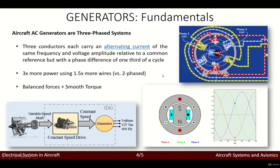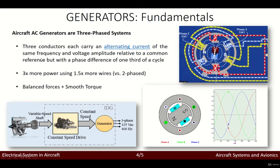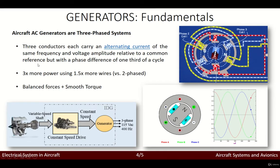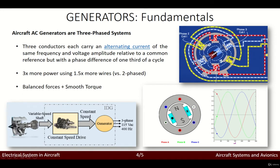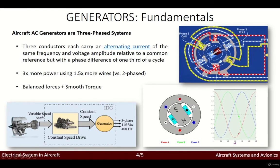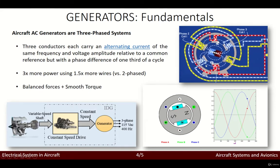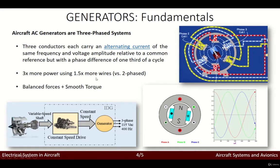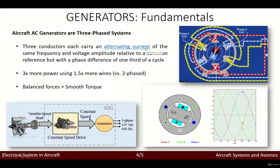So what are the fundamentals of generators? First of all, we need to understand that our generator will be based on a three-phase system. The three conductors will each carry an alternating current of the same frequency and voltage amplitude relative to a common reference, but with a phase difference of one third of a cycle. This phase difference means that the geometry of our generator will be clearly divided into three main axes — three coils. By using three phases, what we get is three times more power using only 1.5 times more wires, compared to a two-phase version.